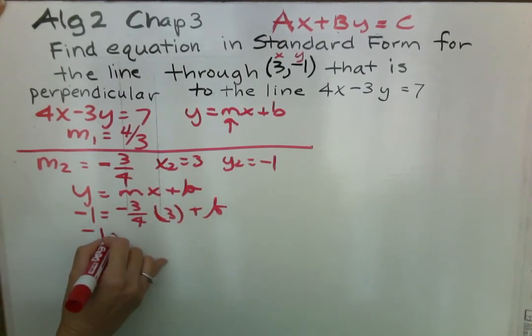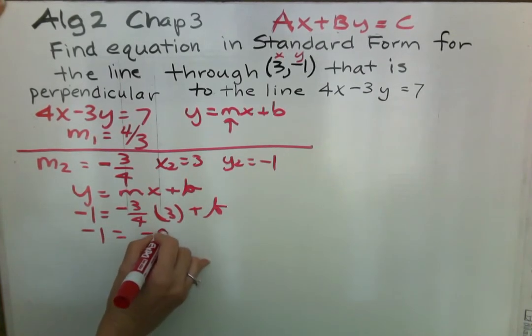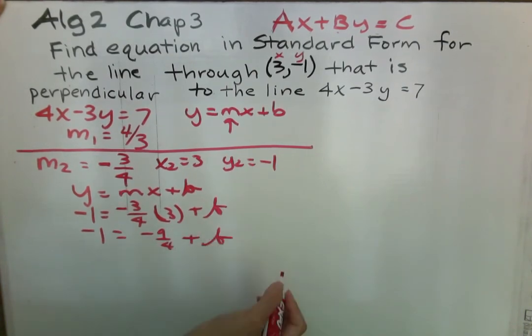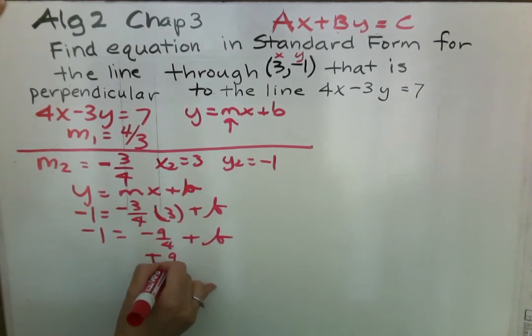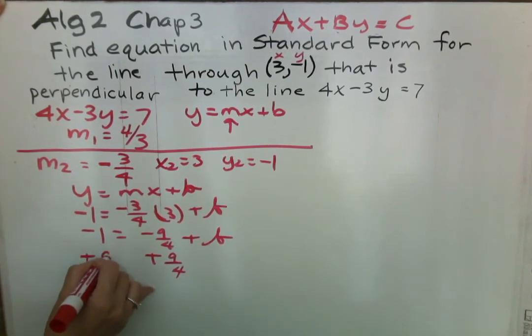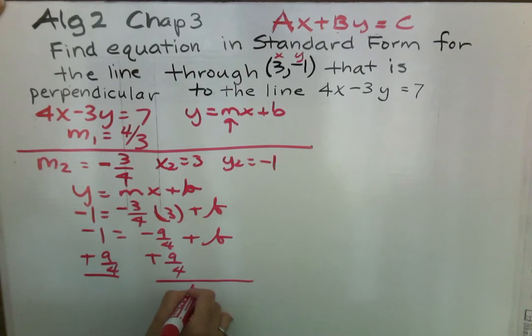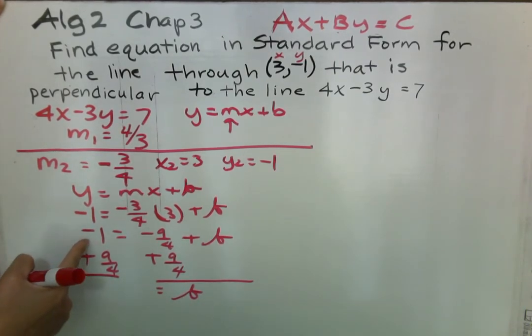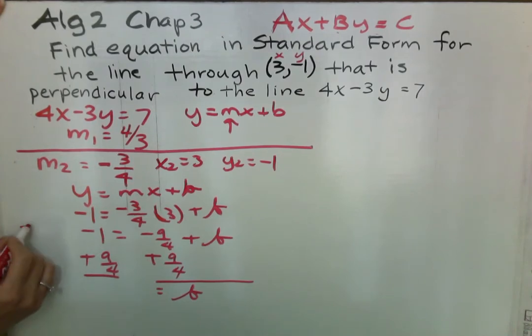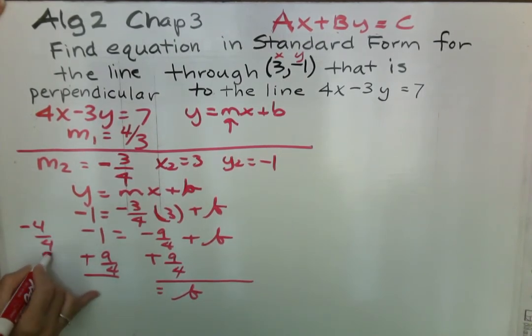Now we have negative 1 equals negative 9 over 4 plus b and we're going to add 9 fourths to both sides. Now I know some of you don't like to work with fractions, but unfortunately we still have to. So I'm just going to convert this negative 1 to negative 4 over 4 so that I can have the common denominator of this.